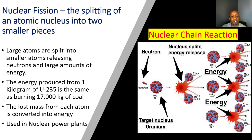The lost mass from each atom is converted into energy. This is what's used in nuclear power plants, and the reason why nuclear power plants like to use uranium-235 is because with this small amount of resource, it can create a lot of energy.